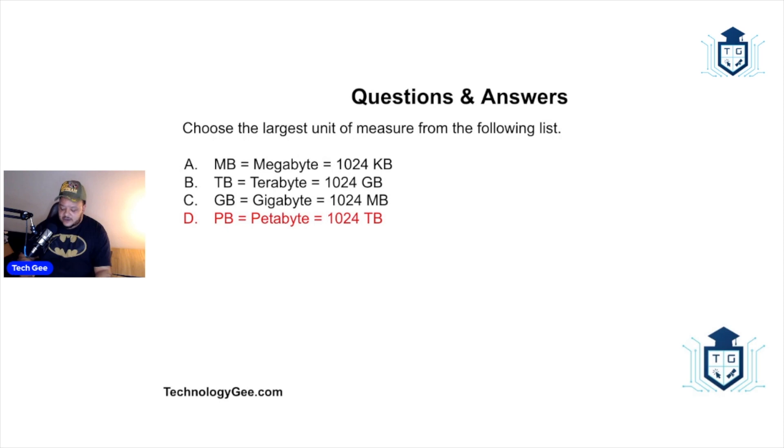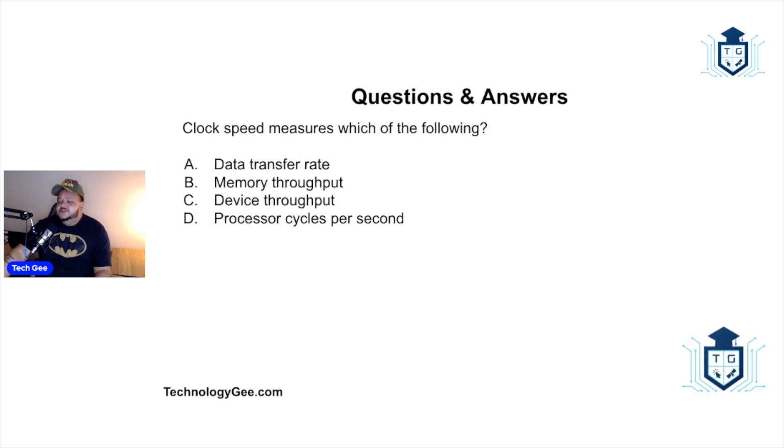Clock speed measures which of the following: data transfer rate, memory throughput, device throughput, or processor cycles per second? The correct answer would be processor cycles per second. When you go buy a computer and they're talking about clock speeds, normally measured in megahertz or gigahertz, they're talking about how fast can the processor, your CPU and/or your GPU, process ones and zeros. Most computers today are measured in gigahertz because they can calculate billions of instructions per second.